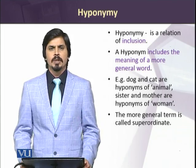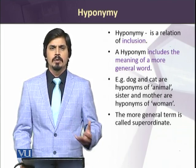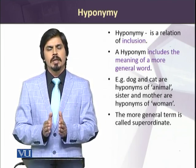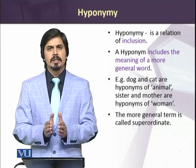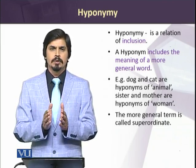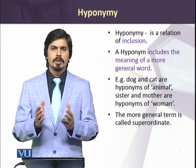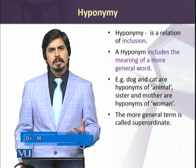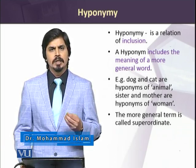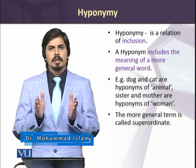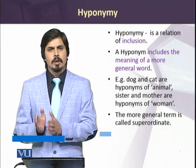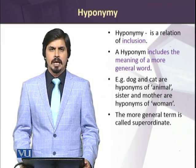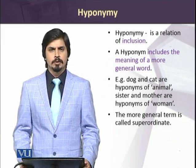We can cite a very common example. We all have heard the words dog and cat. The meanings of dog and cat include the meaning of a more general term which is known as animal. Both are animals, and when we say dog, dog is necessarily an animal. So the meaning of animal is included in the meanings of dog. The more general term whose meanings are included is called a superordinate term.